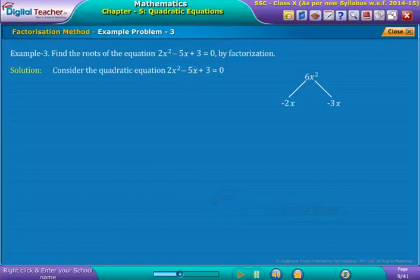For this, list out all possible pairs of multiples of 6. The multiples of 6 are 1, 6; 2, 3; minus 1, minus 6; minus 2, minus 3. From the above pairs except minus 2, minus 3, none of the pairs satisfy the condition for factorization. Hence, the Middle Term minus 5x can be split into minus 2x and minus 3x.